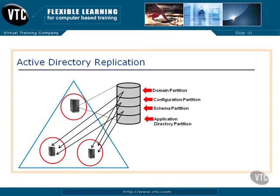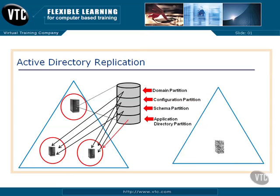If we have installed the application directory partition, this is what gets changed when Active Directory-aware software gets installed — Exchange products, storing DNS, integrating it into Active Directory. That information gets stored in the Active Directory Application Directory partition. That one we can choose where to replicate — it doesn't automatically go to all domain controllers, and we can choose which domain controllers we want to send it to.